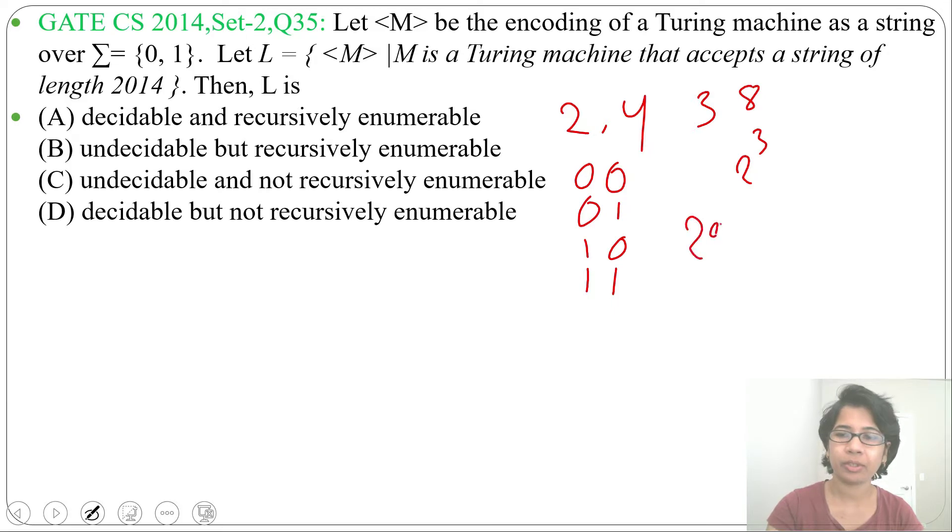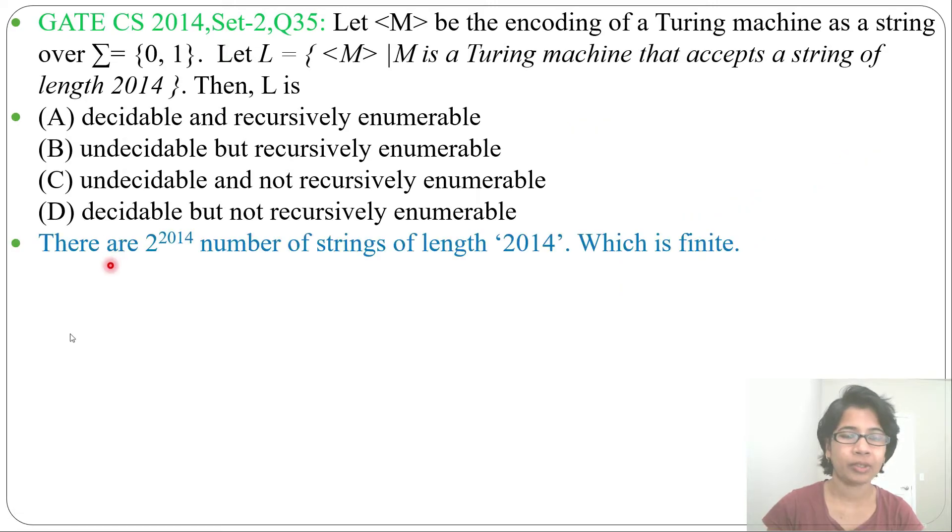So when length will be 2014, it will accept 2^2014 strings. So there are 2^2014 number of strings of length 2014 which is finite.